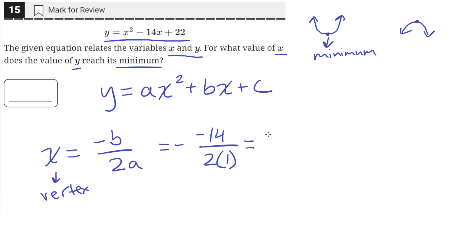So then that'll be equal to, these negatives cancel out, so we'll just have 14 over 2 times 1, which is 2, which is equal to 7. So the x coordinate of the vertex here is 7. So that 7 will be the answer.